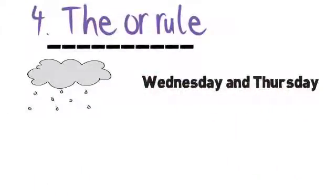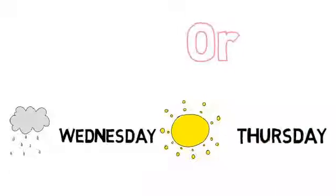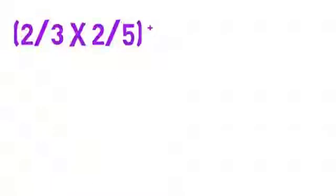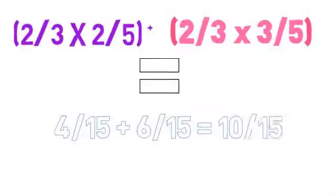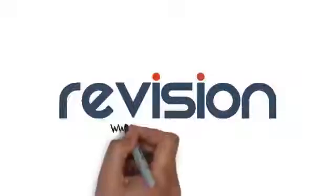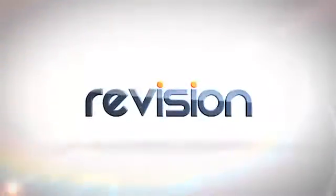The OR rule — using the same information as the AND rule, what are the chances that it will rain on both Wednesday and Thursday, or rain on Wednesday and be sunny on Thursday? Remember that OR equals ADD. So: (2 out of 3 times 2 out of 5) plus (2 out of 3 times 3 out of 5) equals 4 out of 15 plus 6 out of 15, which equals 10 out of 15. This can be cancelled down further to 2 out of 3.